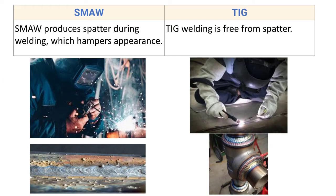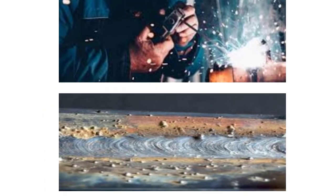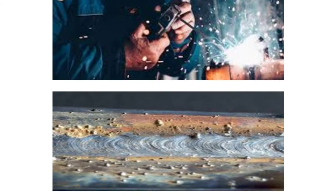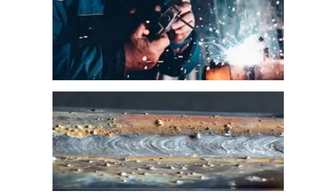Next point: SMAW produces spatter during welding, which hampers the appearance. Spatter consists of tiny droplets of molten filler material that come out during the welding process and deposit over the parent metal. Here you can see spatter deposited over the weld bead and parent metal — it must be removed by processes like grinding, which increases the overall cost of welding.